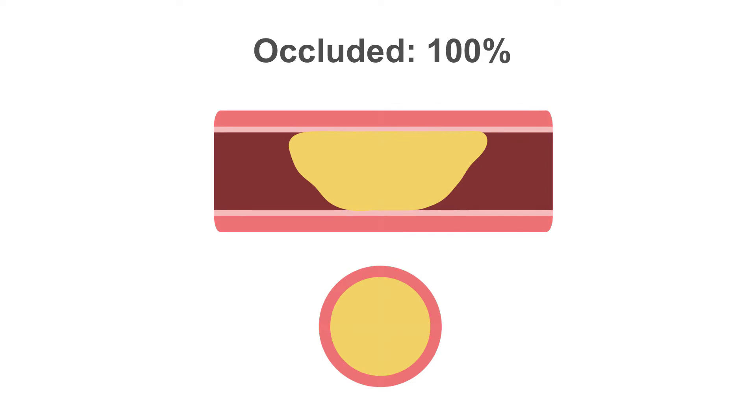Vessel occlusion is where the entirety of the lumen is occupied by plaque, and there is no contrast opacification seen at this point, or immediately distal to the lesion.